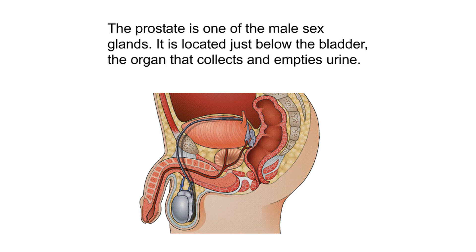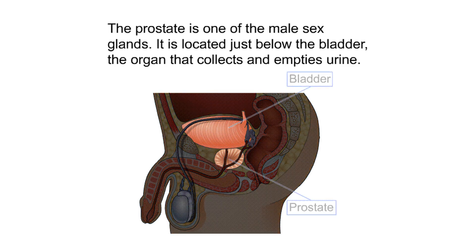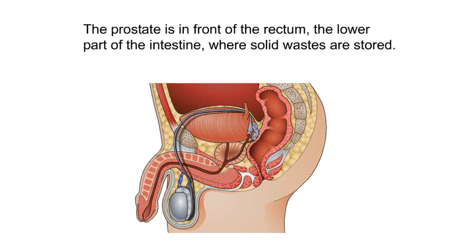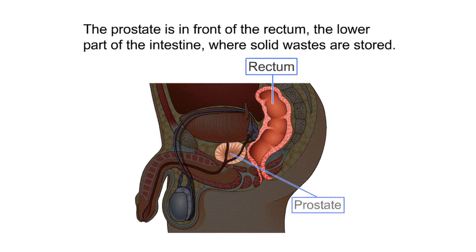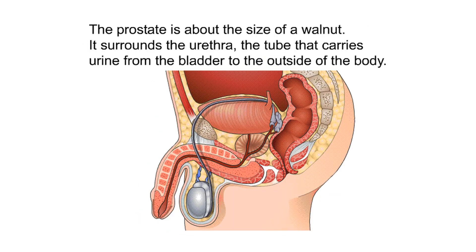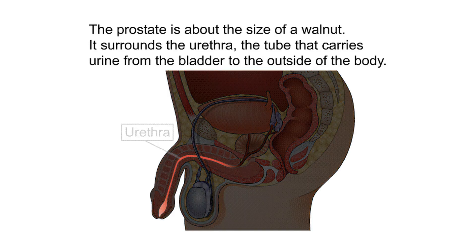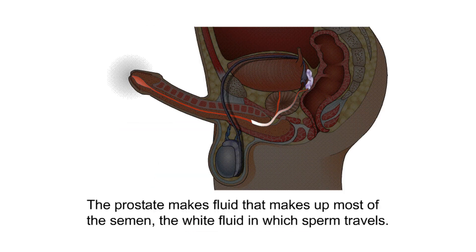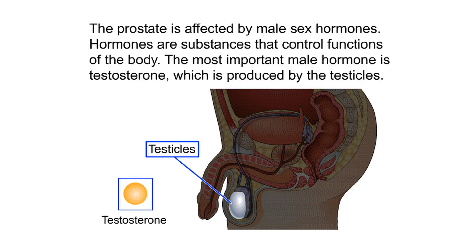Prostate anatomy. The prostate is one of the male sex glands. It is located just below the bladder, the organ that collects and empties urine. The prostate is in front of the rectum, the lower part of the intestine where solid wastes are stored. The prostate is about the size of a walnut. It surrounds the urethra, the tube that carries urine from the bladder to the outside of the body. The prostate makes fluid that makes up most of the semen, the white fluid in which sperm travels. The prostate is affected by male sex hormones, which are substances that control functions of the body.